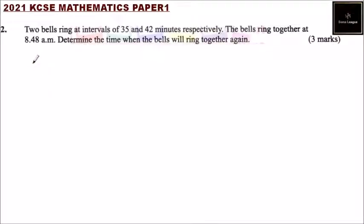Question number two: Two bells ring at intervals of 35 and 42 minutes respectively. The bells ring together at 8:48 AM. Determine the time when the bells will ring together again.